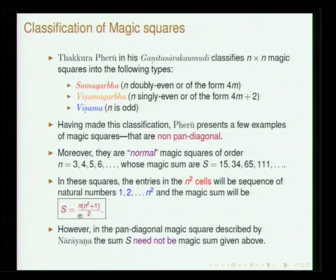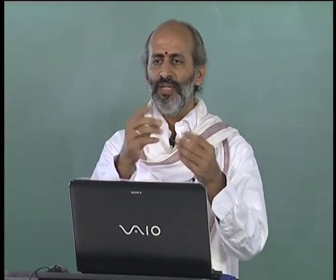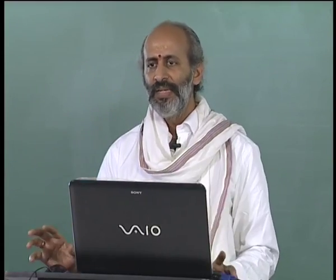For a 3×3 square one goes from 1 to n², filling all 1 to 9 to get a magic square where the sum is 15. For 1 to 16, the sum will be 34, and then 65 and so on. The magic sum will be n(n²+1)/2. Narayana actually gives a procedure wherein one need not consider just 1 to 16 to construct a 4×4 — you can give any number and construct a pan-diagonal magic square using a systematic procedure.